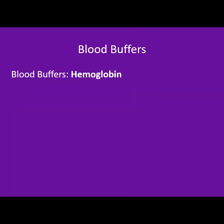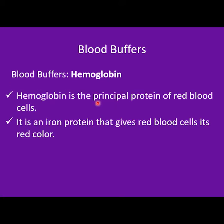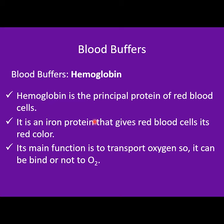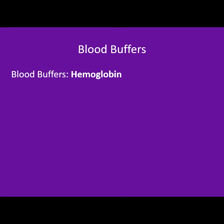Another important buffer is hemoglobin. Hemoglobin is the principal protein of red blood cells — an iron-containing protein that gives red blood cells their red color. Its main function is to transport oxygen. We find oxyhemoglobin when it is bound to oxygen, and deoxyhemoglobin when it is not bound to oxygen. As a protein, hemoglobin can bind protons and act as a buffer simply by binding or releasing protons. Interestingly, oxygen changes the capacity of hemoglobin to bind protons.